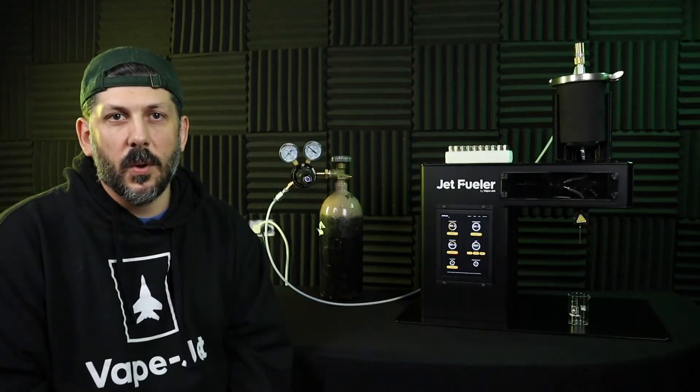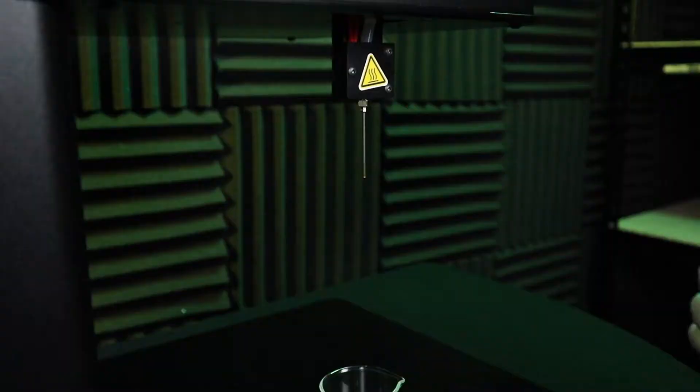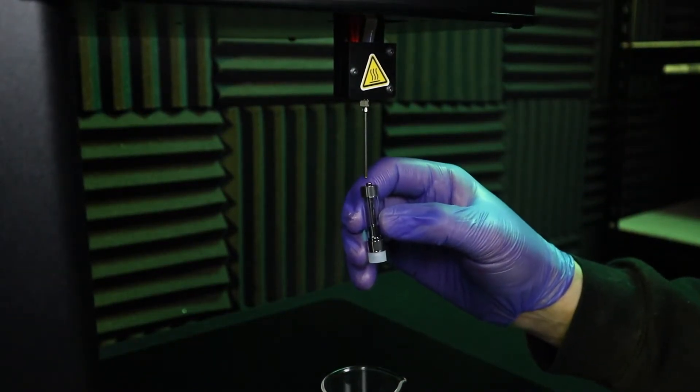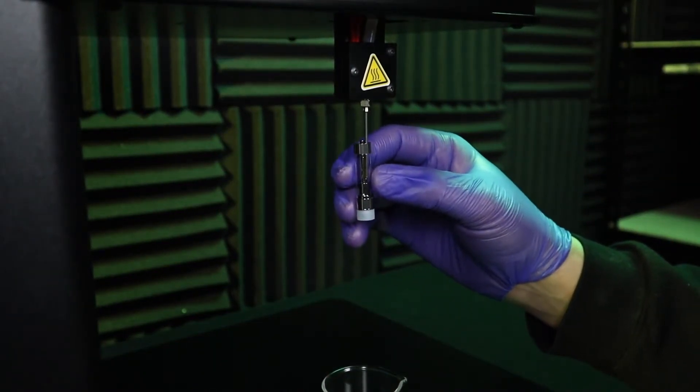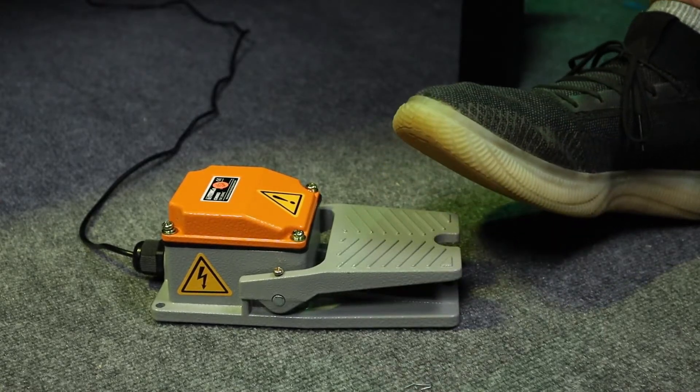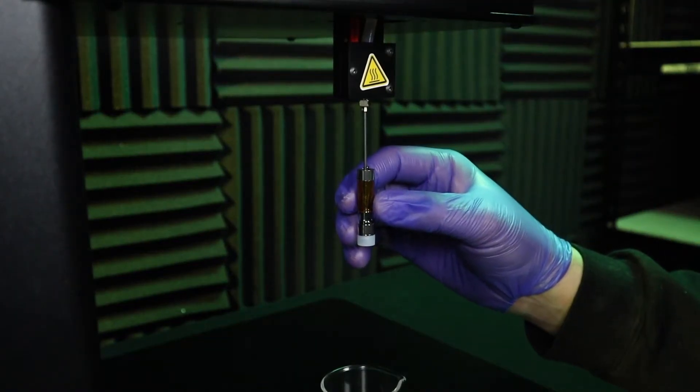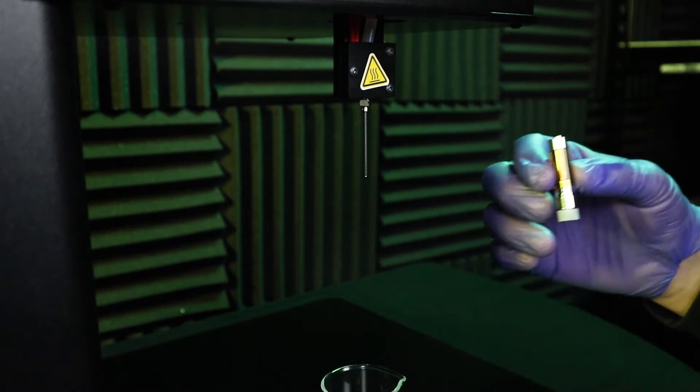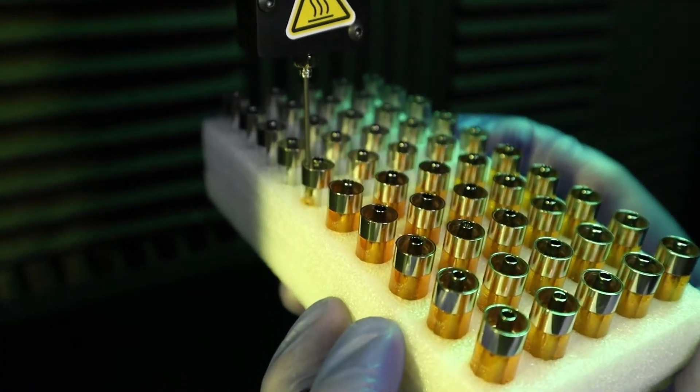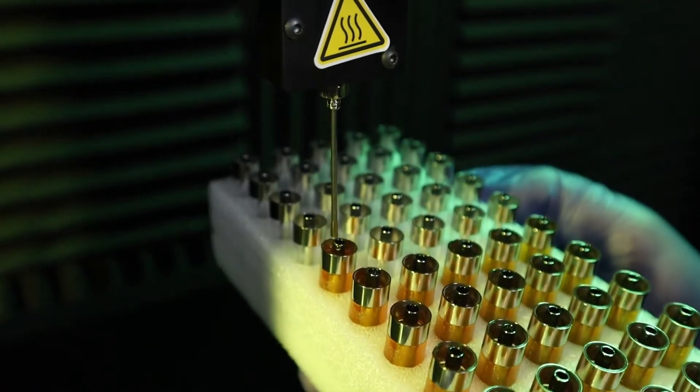To dispense, hold the container to be filled—your vape cartridge, capsule, bottle, etc.—such that the needle is inside the container, then press the foot pedal or click cycle from the GUI to dispense the calibrated amount of fluid into the container. When the pump is dispensed, it will automatically recharge the syringe for the next container.